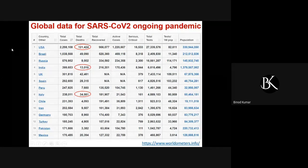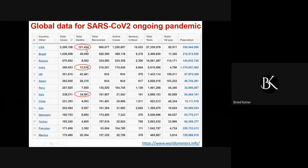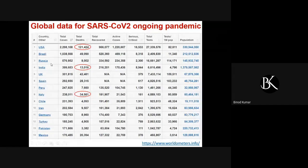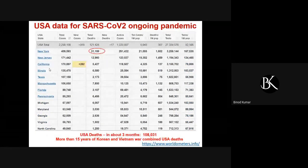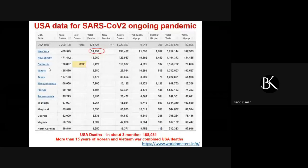Looking at the global data for SARS coronavirus 2 in this ongoing pandemic, the USA has the maximum number of total cases and the highest total deaths, followed by Brazil, Russia, and India. The USA represents North America, Russia and India represent Asia, so all major continents — except Antarctica — definitely have the coronavirus pandemic infection.